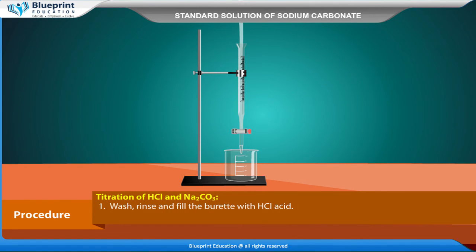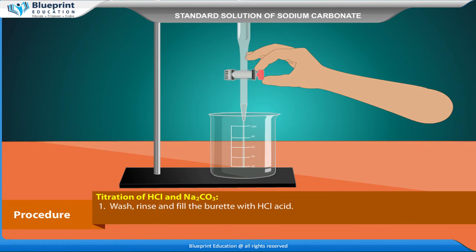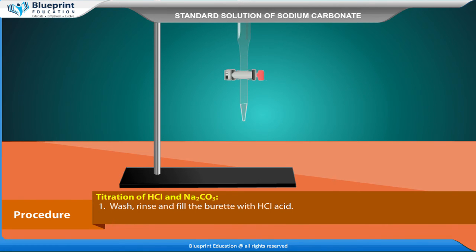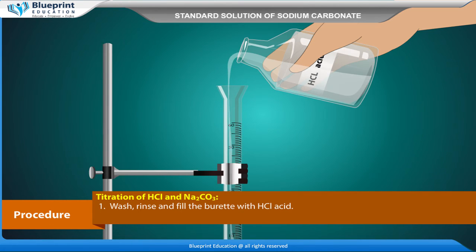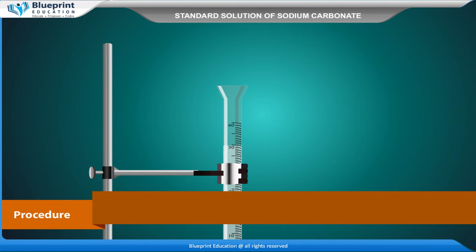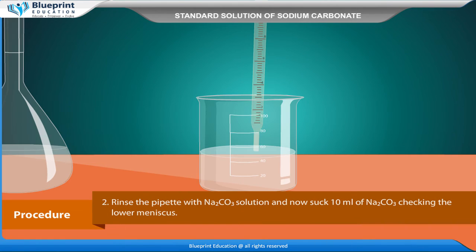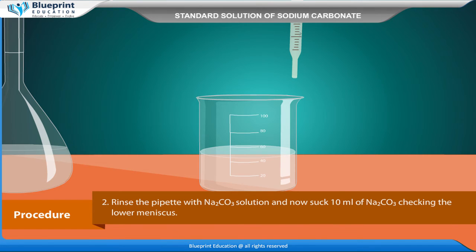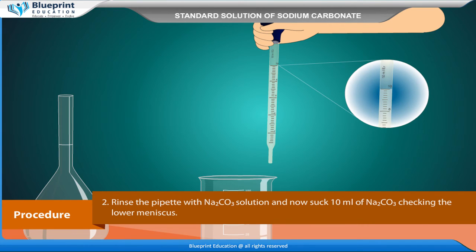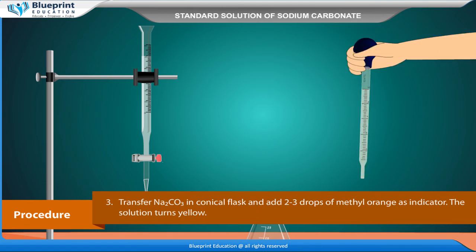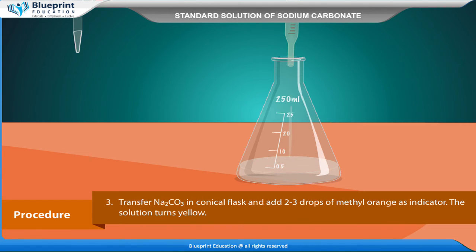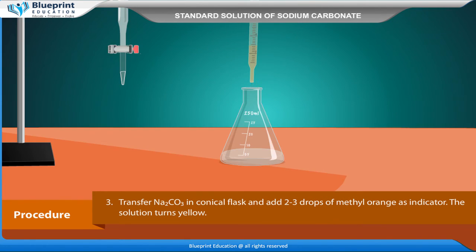Titration of HCl and Na2CO3: Wash, rinse and fill the burette with HCl acid. Rinse the pipette with Na2CO3 solution and suck 10 ml of Na2CO3, checking the lower meniscus. Transfer Na2CO3 into a conical flask and add 2–3 drops of methyl orange as indicator. The solution turns yellow.